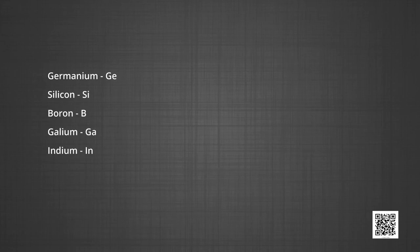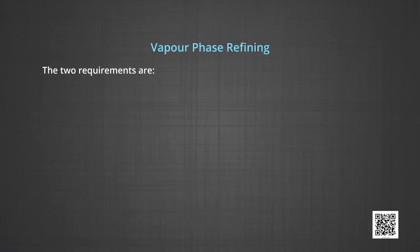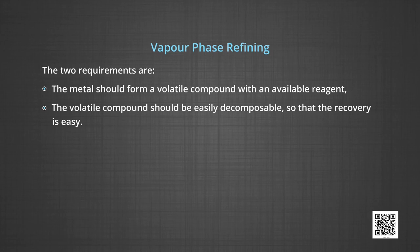Next method is vapor phase refining. In this method, the metal is converted into its volatile compound and collected elsewhere. It is then decomposed to give pure metal. So, the two requirements are the metal should form a volatile compound with an available reagent. And second, the volatile compound should be easily decomposable, so that the recovery is easy. Following examples will illustrate this technique.